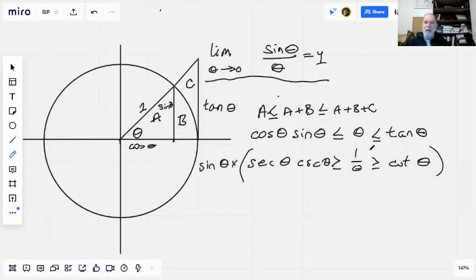So sine times the cosecant, they'll cancel each other out and we are left with the secant of theta.